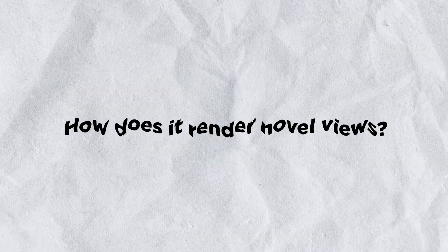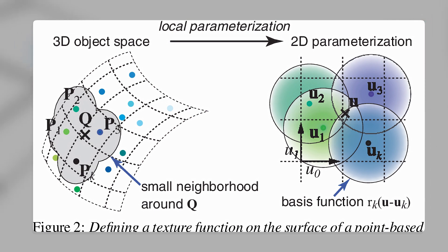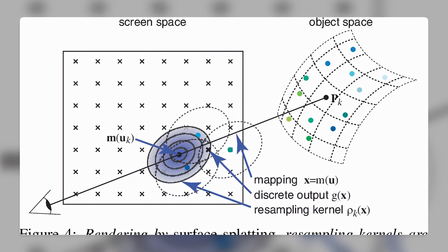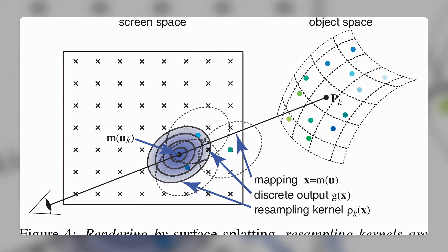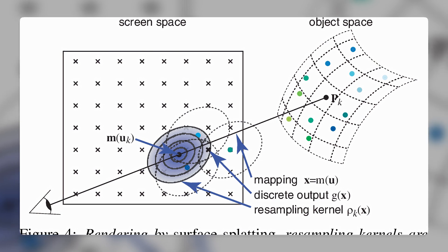To render novel views from these 3D Gaussians, they use a fast visibility-aware rendering algorithm that supports anisotropic splatting, which both accelerates training and allows real-time rendering. Anisotropic splatting is a technique that projects each 3D Gaussian onto the image plane according to its covariance matrix, preserving the shape and orientation of each 3D Gaussian in the rendered image.